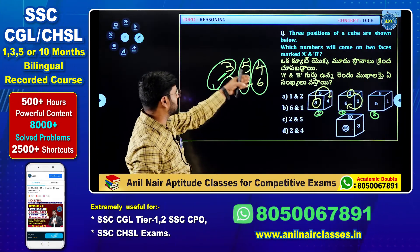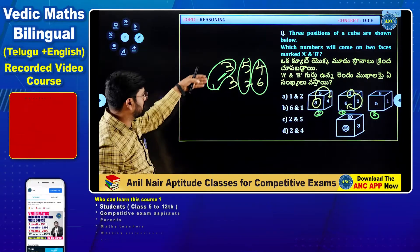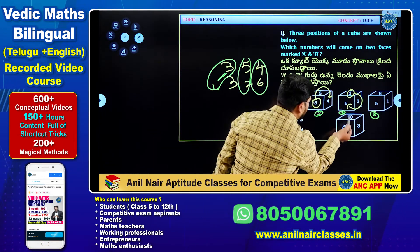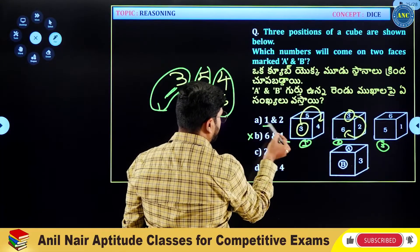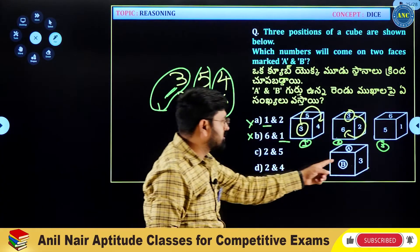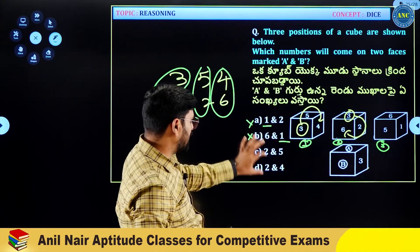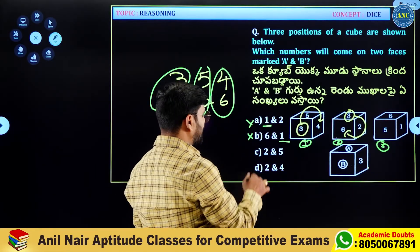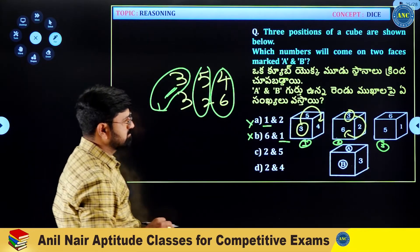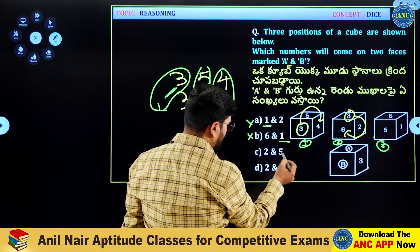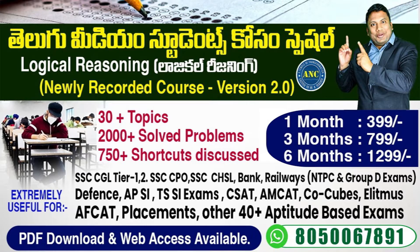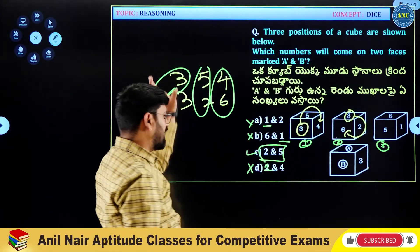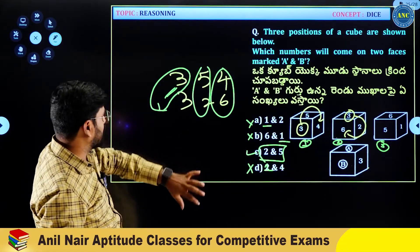The faces are 2, 3, 4, 5, 6 - 1 is completely used. So remaining face: 3 ki opposite is 1. So 3 pakkana one unda kudadhu - 1 should not be adjacent to 3. So in the options, there should be a change - definitely one should not be there adjacent to three. So two-four or two-five, whichever option - one should not be at the end. Clearly two-five is the answer.